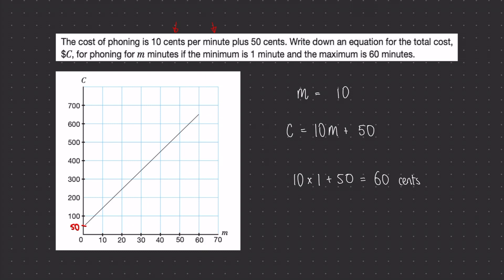Now we're going to have a go at 60 minutes. So 10 times 60 plus 50, that's 650 cents. That would be the maximum we would be charged.